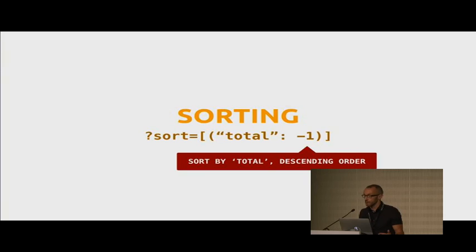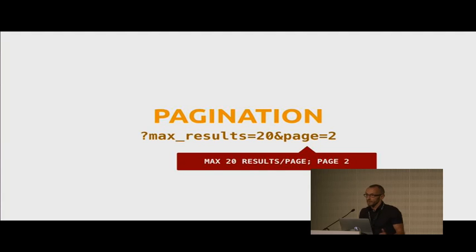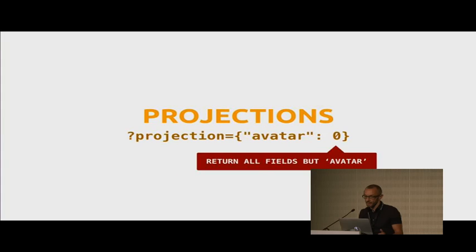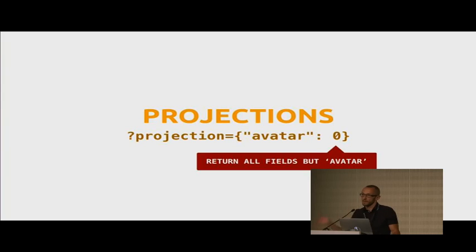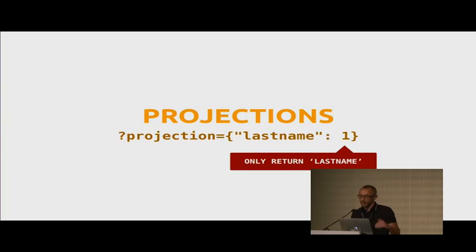You can have sorting on your endpoint — here we are sorting in descending order. You can use pagination, which is enabled by default. Here we are asking for page two with only 20 results maximum. Projection is very nice — you have a document with, say, 50 fields, and you can say don't give me these fields in this request to save on bandwidth or performance. Here we are telling the API, don't send me the avatar. Or conversely, only return the last name — very handy when writing a mobile application to optimize traffic.